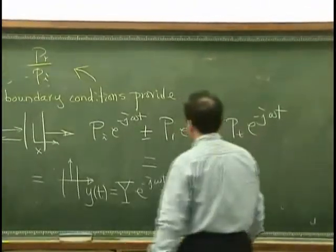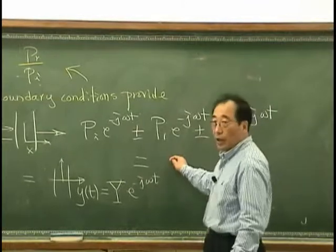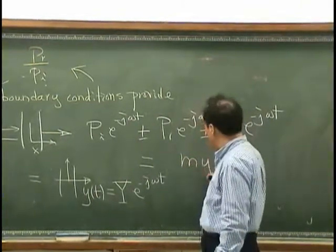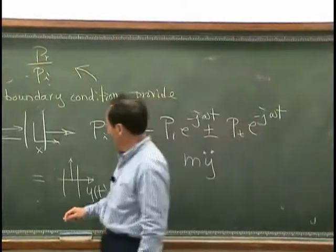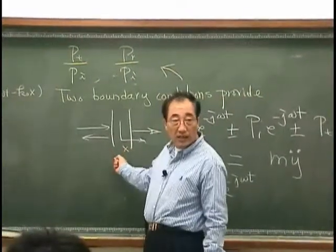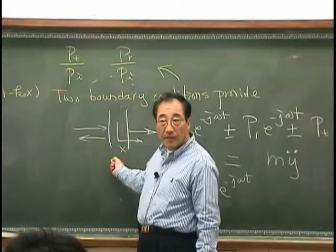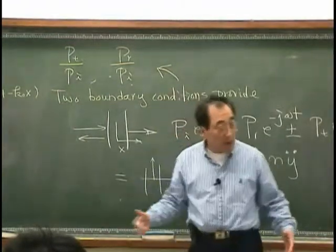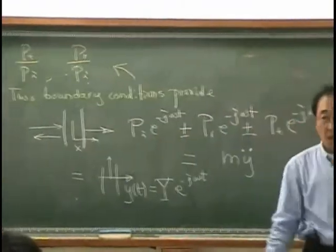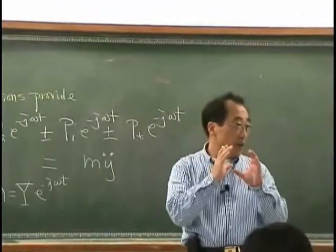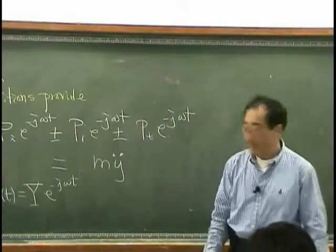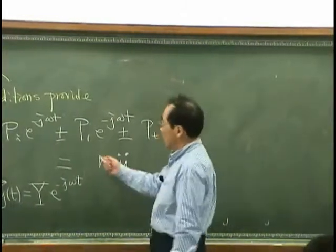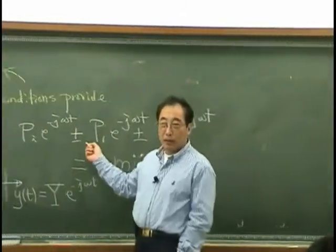So I should write over here, say, m y double dot. And I am using coordinate x in this direction. That is simply I am applying Newton's second law for the unit area of limp wall. And the problem is this sign convention.